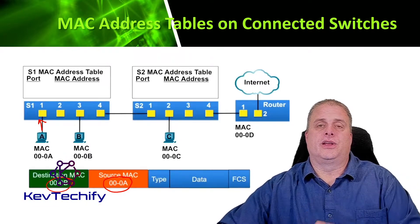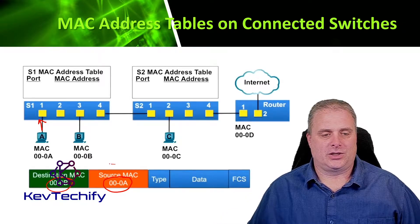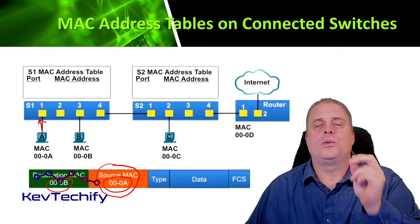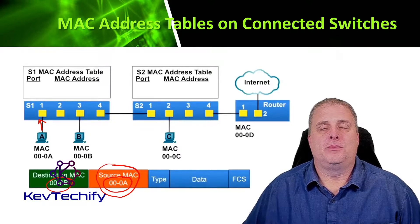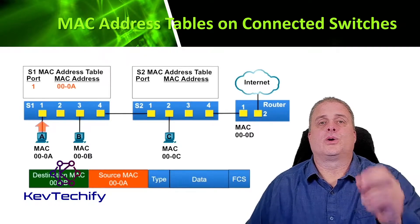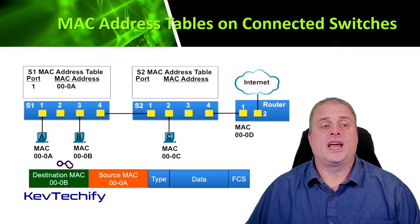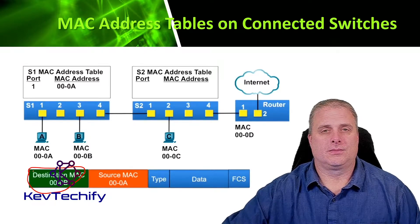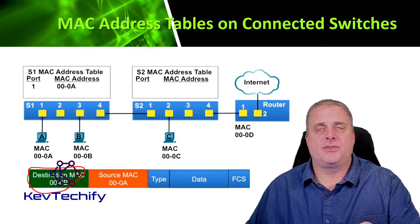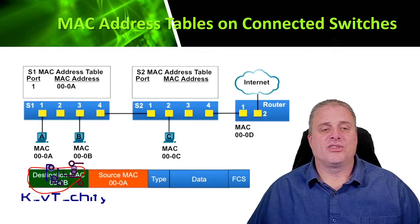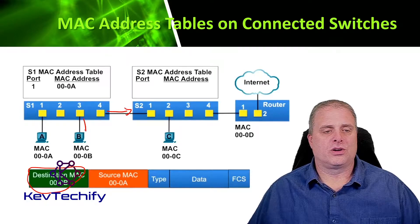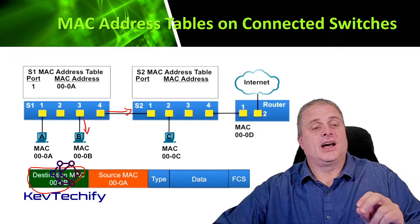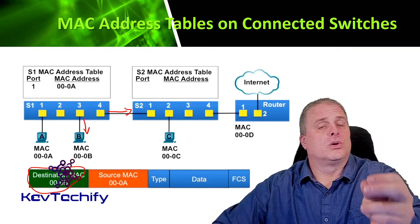The Ethernet frame is sent to switch S1. S1 receives it, examines the source MAC address, and notices that this source MAC address is not in its own MAC address table. So it adds the MAC address and incoming port number to its own MAC address table. Next, switch S1 examines the destination MAC address and notices it is also not in its MAC address table. So it floods out all ports — it goes out of port 4 and port 3. There's nothing connected to port 2, so it doesn't send it there, and it does not send it back out port 1, which is where it was received.